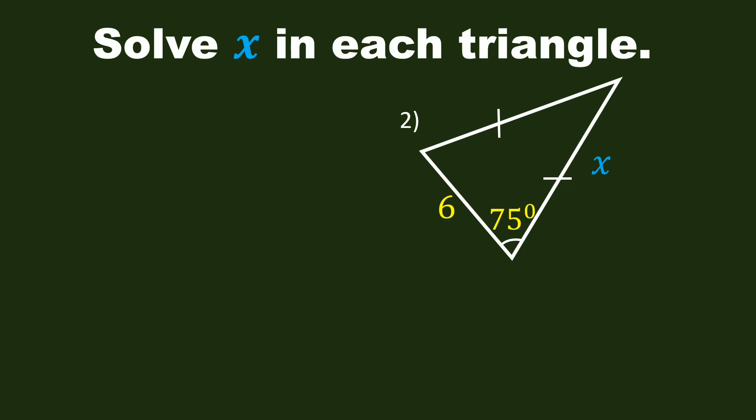Let's solve X in the second triangle. This triangle is an isosceles triangle. The two sides are congruent, thus the base angles are also congruent. So if one base angle is 75 degrees, the other base angle is also 75 degrees. The third angle is now 30 degrees by the angle-sum theorem.